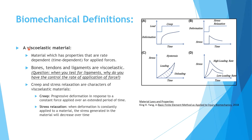An important concept is viscoelastic material — material whose properties are rate dependent or time dependent for the applied force. In orthopedics, bone, tendons, and ligaments are all viscoelastic materials. This means that if you are doing research on different specimens of bone, you have to control the rate of force application, because this rate will affect the behavior of the bone.